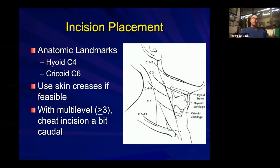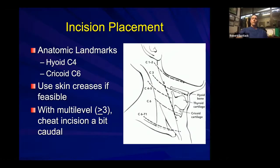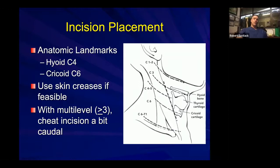When doing multiple levels — say a four-level through a transverse incision — I find it easier to cheat the incision a little caudally, because the angle of approach to the deeper upper thoracic spine is more challenging from a higher incision, whereas migrating cephalad is a little easier as tissue tends to be more supple cephalad than caudad. For a four-level C3-7, I might cheat the incision closer to the cricoid cartilage rather than midway toward the hyoid.